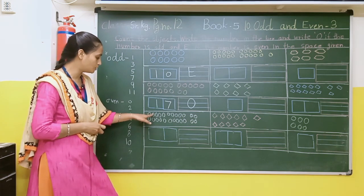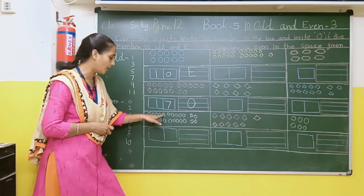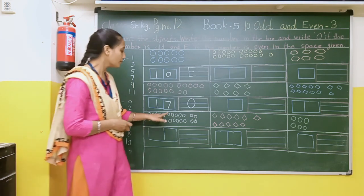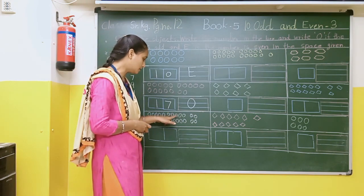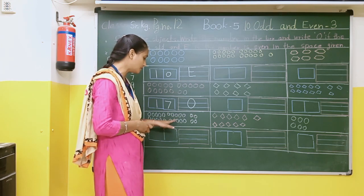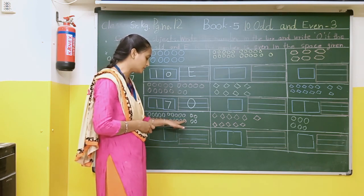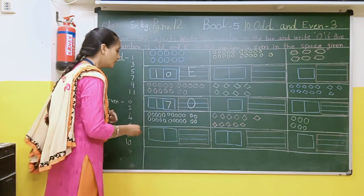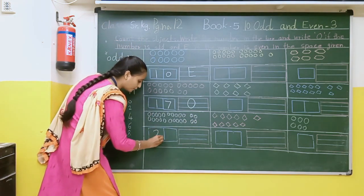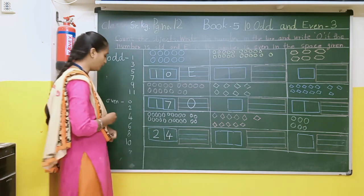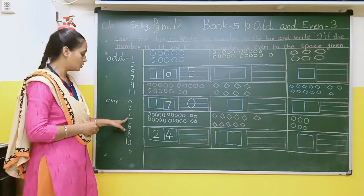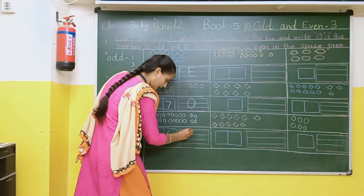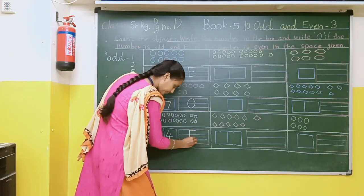Now count here: 1, 2, 3, 4, 5, 6, 7, 8, 9, 10, 11, 12, 13, 14, 15, 16, 17, 18, 19, 20, 21, 22, 23, 24. Here the total number is 24. So 4 comes under even. So it's an even number. We have to write capital E.